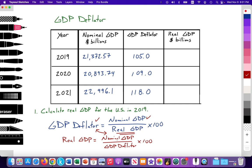Now that you have this equation, pause the video and go ahead and calculate real GDP for the year 2019. Please pause now. Let's see if your workings match the correct answer for 2019 — calculate real GDP for the U.S. in 2019.